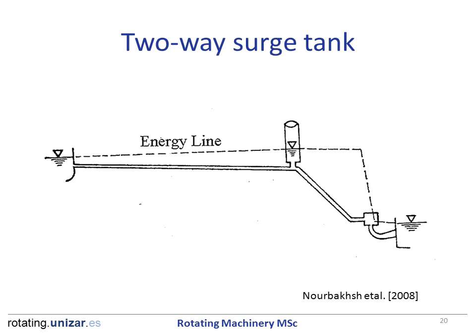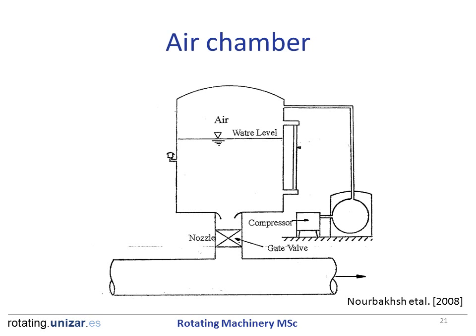This is an example of using a two-way surge tank to alleviate water hammer. You can see here in the middle the liquid tank, which lets liquid in and out. This diagram shows an air chamber where the compressed air helps reduce the size of the tank.